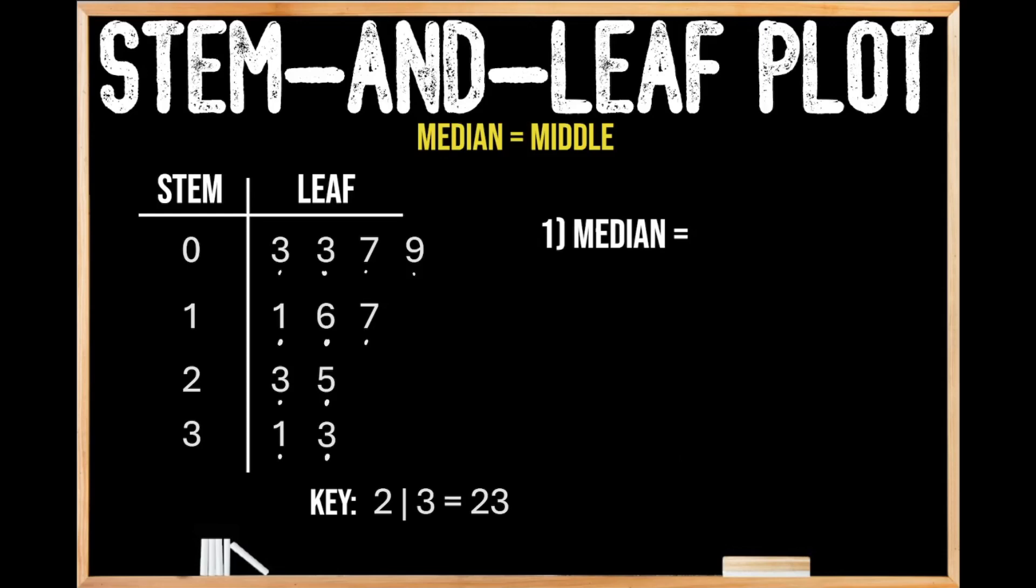So now that we know that we have 11 values in our stem-and-leaf plot, we need to figure out the position of our median value. And to do this, we're going to add 1 onto our 11, and then we're going to divide that by 2, and that's going to tell us the position of our median value. So when we add 11 plus 1, we get 12, and when we divide 12 by 2, we get 6.